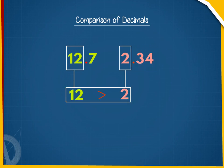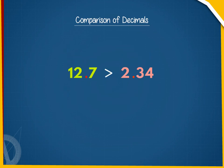As 12 is greater than 2, 12.7 is greater than 2.34.